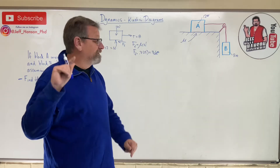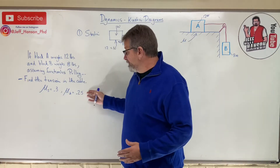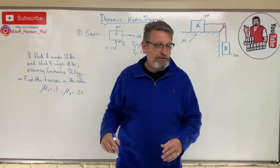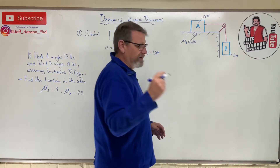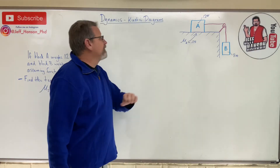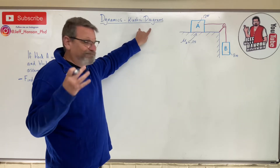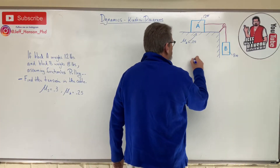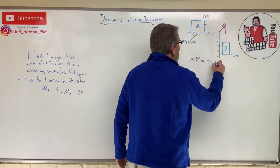Now we approach this as a dynamics problem. For dynamics, we use the kinetic coefficient of friction — kinetic means it's moving. So mu sub k equals 0.25. The concept to introduce here is kinetic diagrams, and we'll solve this using our number one dynamics equation: Newton's second law, sum of forces equals m times a.